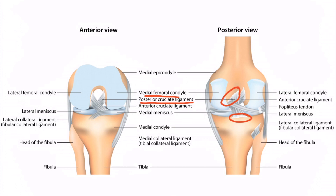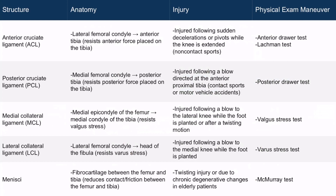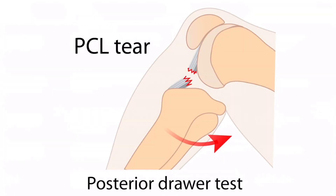From the anatomy, you can tell that this ligament resists posterior force placed on the tibia. If you imagine trying to push the tibia into the screen away from us, the PCL would resist that force because of its firm attachment on the medial femoral condyle. A PCL injury most commonly occurs following a blow directed at the anterior proximal tibia, most commonly associated with contact sports injuries or motor vehicle accidents. The exam maneuver used to identify a PCL injury is the posterior drawer test. In this test, the knee is bent to 90 degrees and force is applied on the tibia in a backward motion. If there is greater than expected laxity of the tibia in relation to the femur, the test is positive, indicating a PCL tear.